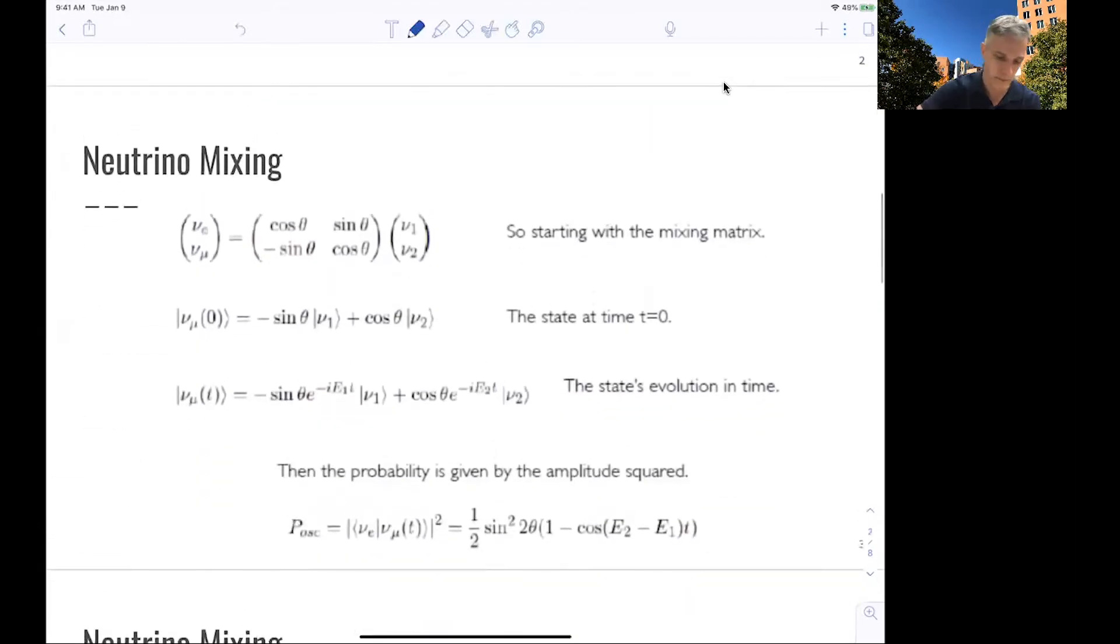So we can, at some time t=0, write our electron neutrino or muon neutrino as a combination of the one and two mass eigenstates. If we then have this neutrino evolve with time, we see that the relative contribution of the one and two mass eigenstate actually changes.